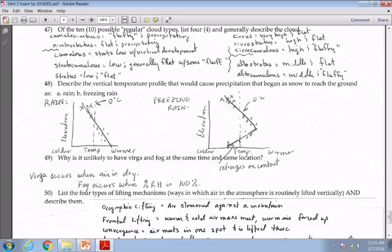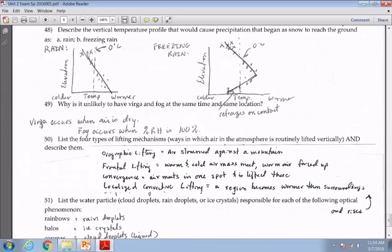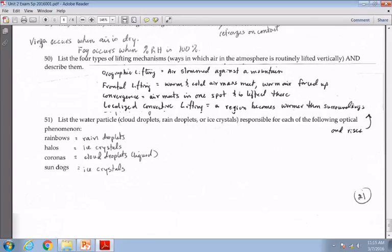So for forty-nine, that was another homework question, where why can't you have virga and fog coexist? And the answer, of course, is virga needs dry air and fog needs moist air. Number fifty, the four lifting mechanisms. We have the mountain lifting, orographic lifting, the frontal lifting, fronts, convergence, that is basically air is going to meet up at a certain point. We'll be talking more about this, actually, this week, convergence. And it goes up as it meets. Localized, convective lifting, a spot kind of got warmer than its surrounding, and it became buoyant and rise.